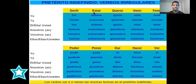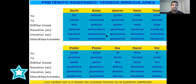Let's go with estar. Estar is to be also, but you already know the difference between ser and estar. If you don't know, I'm going to record a video for you and show you the difference — when do you use ser and when do you use estar? Let's read it. Yo estuve, tú estuviste, él estuvo, nosotros estuvimos, vosotros estuvisteis, ellos estuvieron.